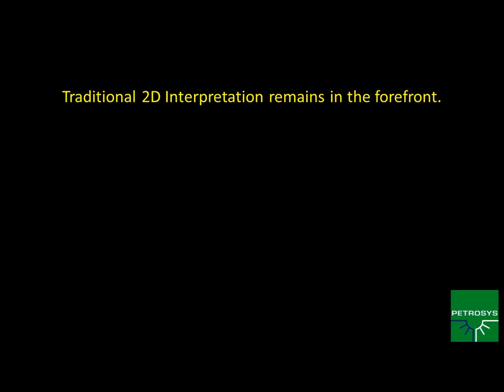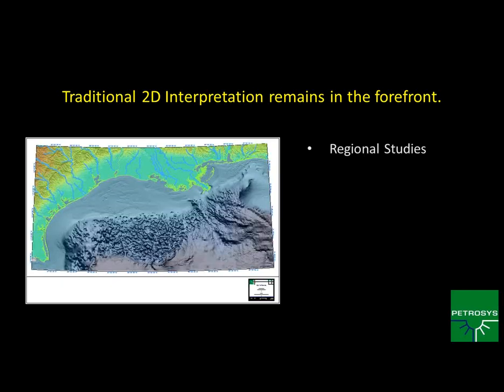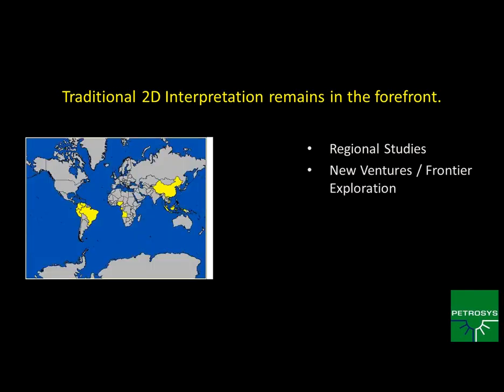Traditional 2D interpretation remains an important part of geological exploration when looking for oil. 2D data is mainly used for regional studies — things like looking at the Gulf of Mexico and lower tertiary mapping over a very large area. Even if you have fine-grained 3D seismic surveys, it's nice to have 2D so you can get a regional view and connect different 3D surveys. New ventures and frontier-type exploration often starts with 2D information.